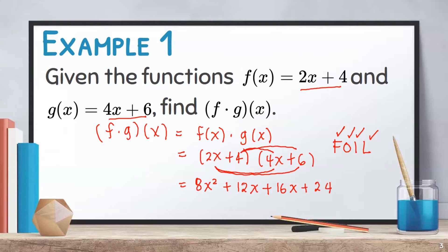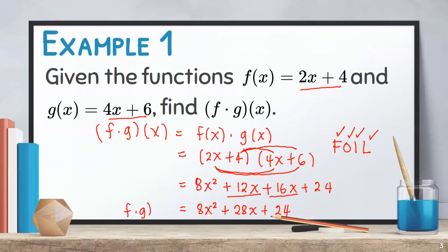From here, we can combine the similar terms. The similar terms are positive 12x and positive 16x. We simply copy 8x squared and 24. Therefore, positive 12x plus positive 16x is positive 28x, and copy plus 24. Therefore, f times g of x is equal to 8x squared plus 28x plus 24.